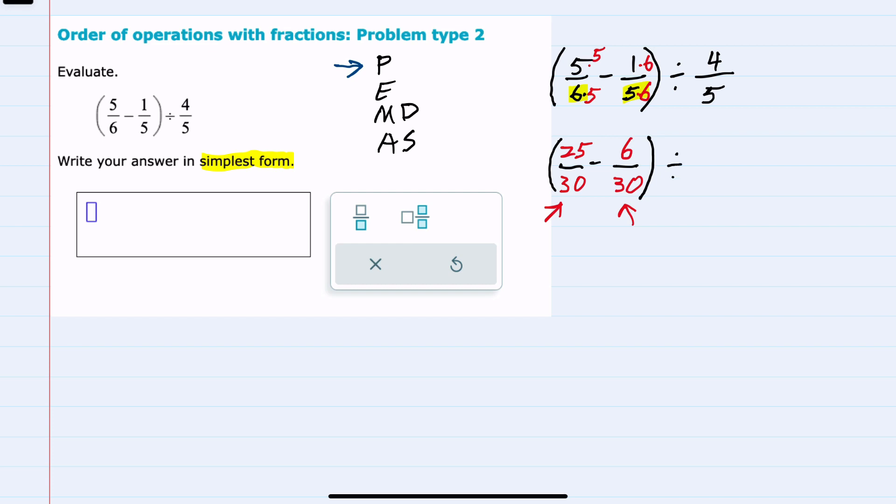I'll bring down the rest of the expression, but we can continue to work inside this parentheses. Now I can actually do this subtraction. Since I have that common denominator of 30, when I subtract fractions with a common denominator, I keep that denominator 30, and in the numerator we have 25 minus 6. We can do that operation: 25 minus 6 is 19.